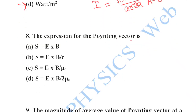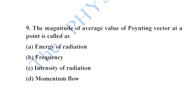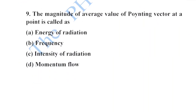Next: the expression for the Poynting vector is S = E cross B / μ₀. Option C is your correct option. And the magnitude of the average value of the Poynting vector at a point is called the intensity of radiation. Option C is your correct option.